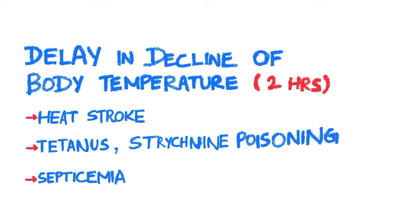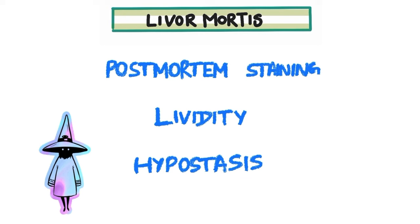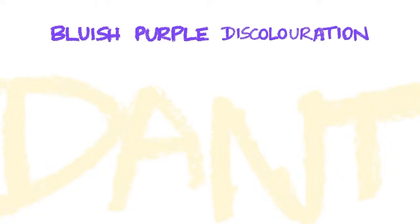The next early post-mortem change is livor mortis, also called post-mortem staining, lividity, or hypostasis. This is a bluish-purple discoloration which happens in the dependent parts of the body.